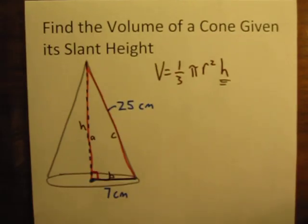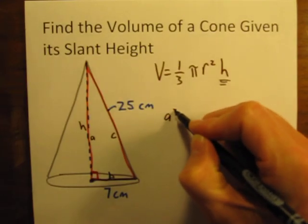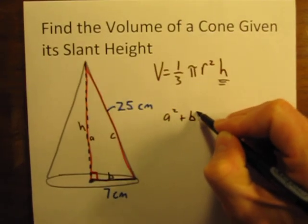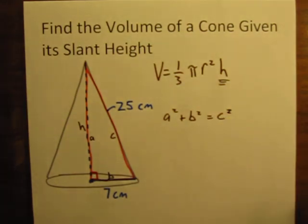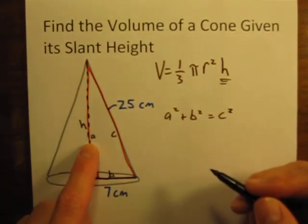The Pythagorean Theorem is what you always use when you're dealing with right triangles and one side is missing. What does the Pythagorean Theorem say? It says that A squared plus B squared is equal to C squared. So let's figure out what this is.